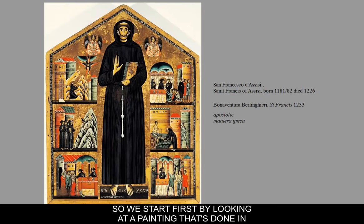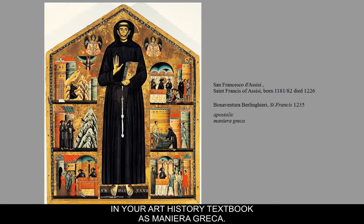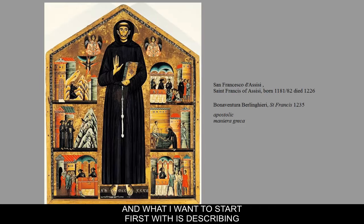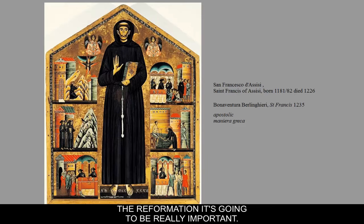We start first by looking at a painting done in the Greek manner — sometimes in your art history textbook it says Maniera Greca. St. Francis is one of the first great apostolic saints of the Italian Catholic tradition, and I want to describe what that means because later, when you study the Reformation, it's going to be really important.